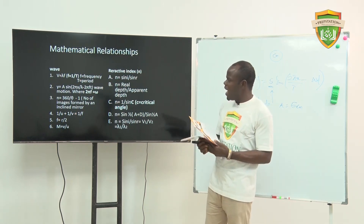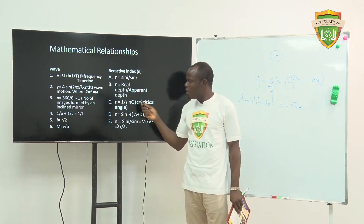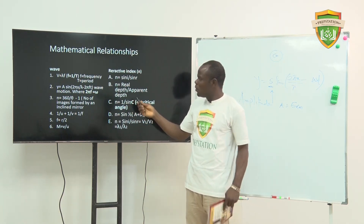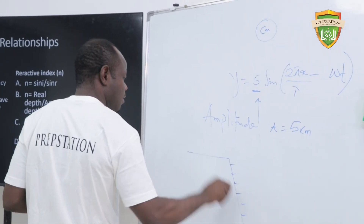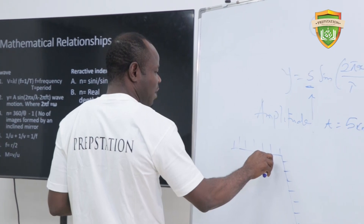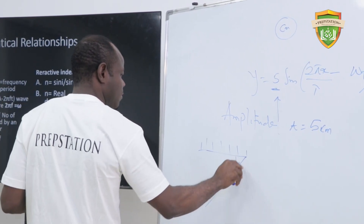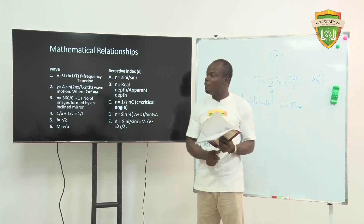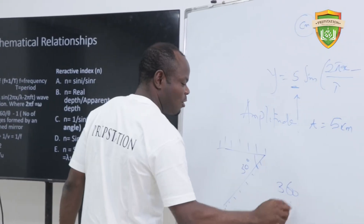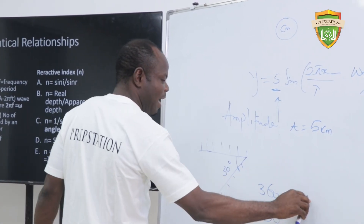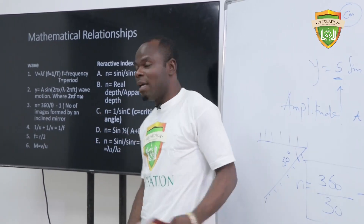Number three: N = (360/θ) − 1. This formula is used when you are given two mirrors inclined at an angle θ. To determine the number of images formed by the inclined mirrors, you divide 360 by the angle of inclination and subtract 1.